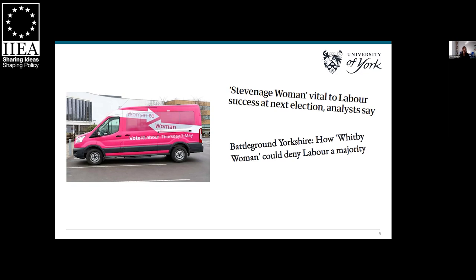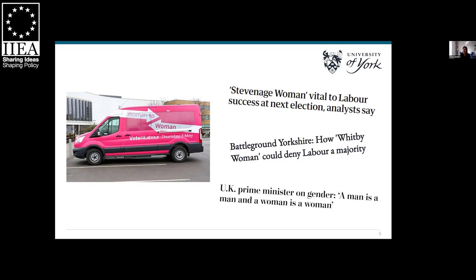The Stevenage woman is identified as a younger woman living in a suburban area, struggling with the cost of living crisis, who voted Conservative in 2019 but has shifted towards supporting Labour. We've also seen the emergence of the 'Whitby woman' — an older voter frustrated about the government, worried about the cost of living and the NHS, but undecided. This targeting of fictional women voters isn't new — we've seen the Worcester woman, schoolgate mums, and the Take a Break woman. What makes 2024 different is the even greater focus on women voters alongside debates within parties about explicitly defining what it means to be a woman.